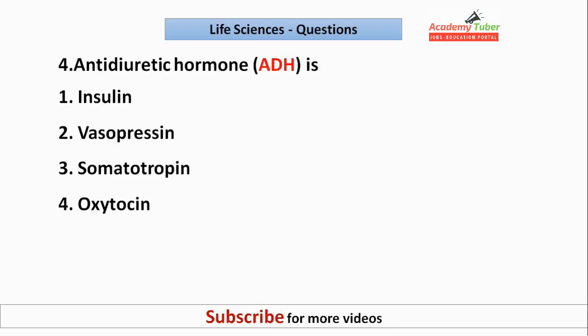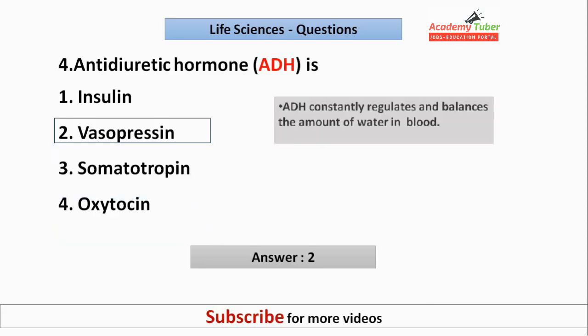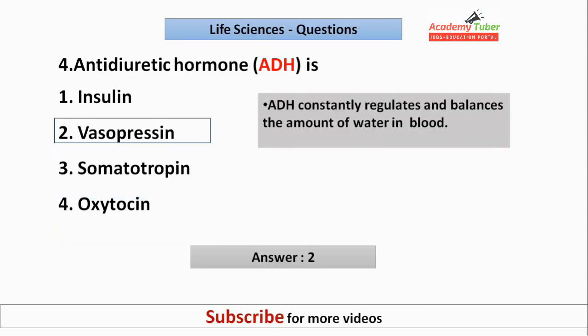Anti-diuretic hormone is? Anti-diuretic hormone constantly regulates and balances the amount of water in blood.